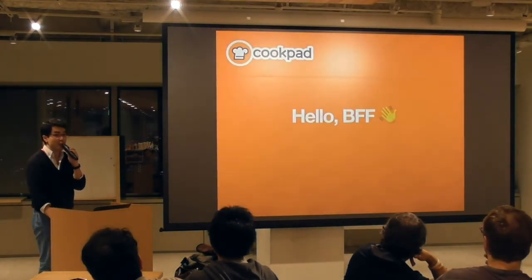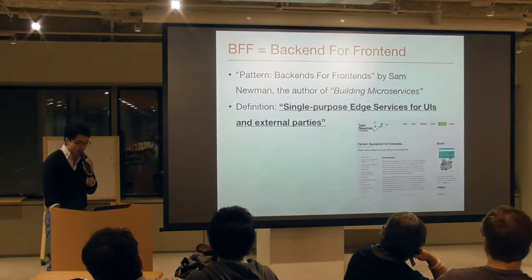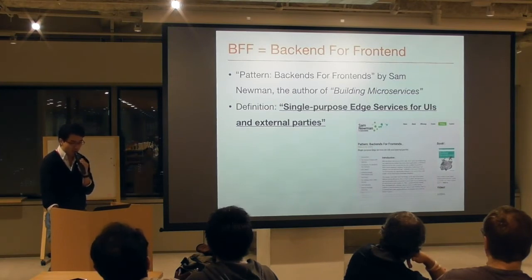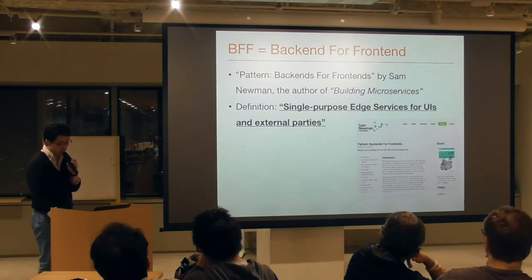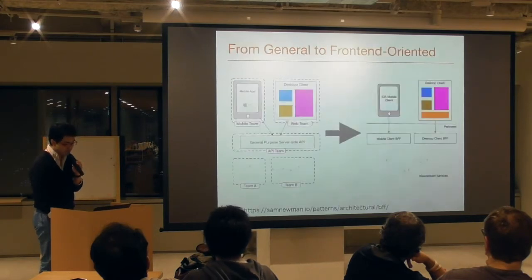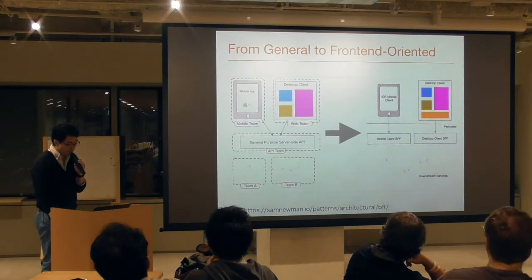This is where BFF comes in. What is BFF? BFF stands for Back-end For Front-end. It is one of several design patterns, coined by Sam Newman, the author of Building Microservices. The definition is: single-purpose edge services for UIs and external parties. The idea is simple — instead of building a general-purpose server-side API, BFF proposes to build client-side oriented services.